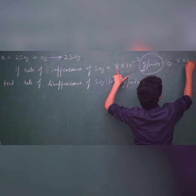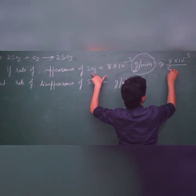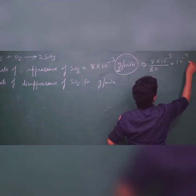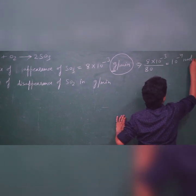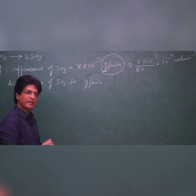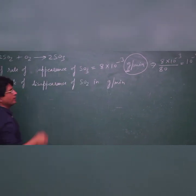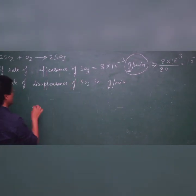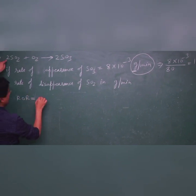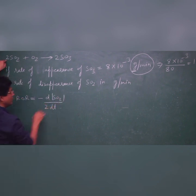So that will be 8×10⁻³ divided by the molecular weight of SO₃, which is 80. That gives 10⁻⁴ moles per minute. Now, this 10⁻⁴ moles per minute is the rate of appearance of SO₃ in moles per minute.